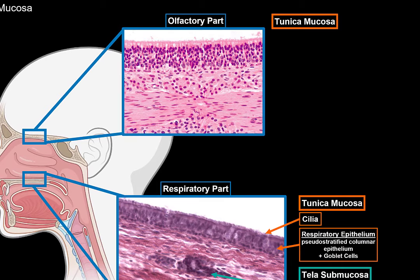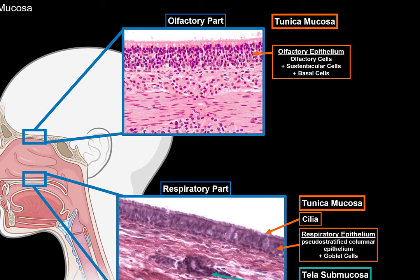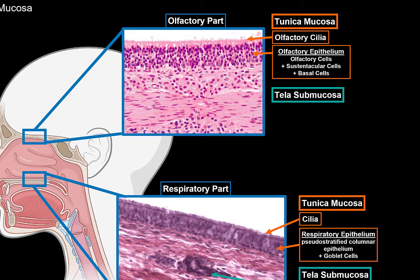The olfactory part also has tunica mucosa, but here it's lined by olfactory epithelium, which consists of olfactory cells, which are bipolar neurons with receptors for smell. Between these neurons, there are supporting cells called sustentacular cells, which are tall columnar epithelium that provide support. You've probably heard that the novel coronavirus may lead to loss of smell, and that is because COVID-19 may damage these supporting cells — the sustentacular cells. Other cells you'll find in the olfactory mucosa are basal cells, which are essentially stem cells to replace the olfactory and sustentacular cells if they get destroyed. On the top, there's the olfactory cilia that the olfactory cells give off containing receptors. In the tela submucosa, there are olfactory glands, also called Bowman's glands, which also produce mucus.